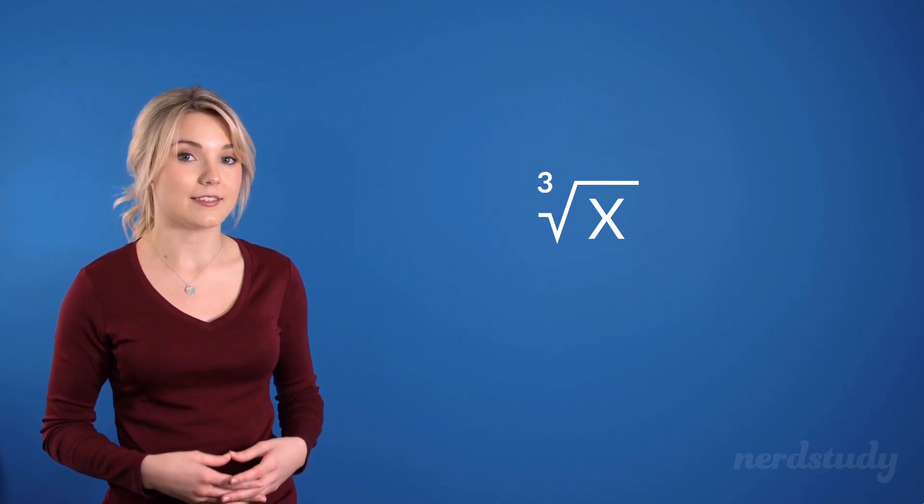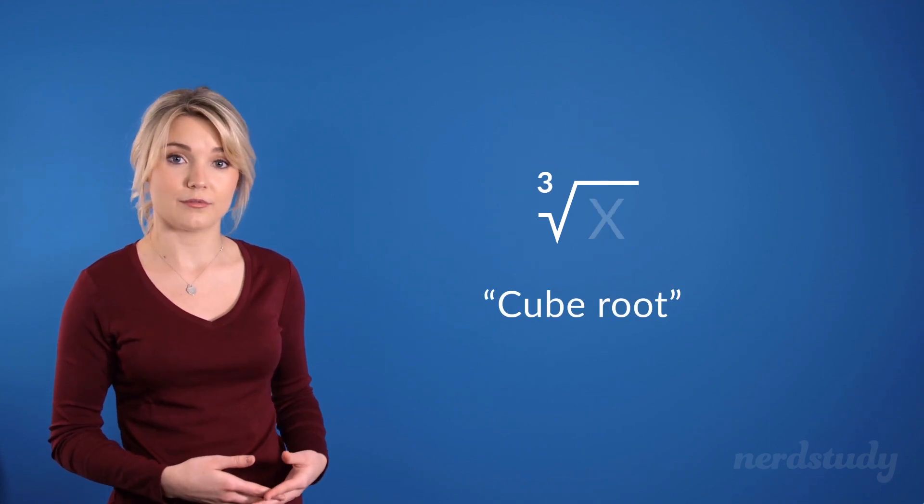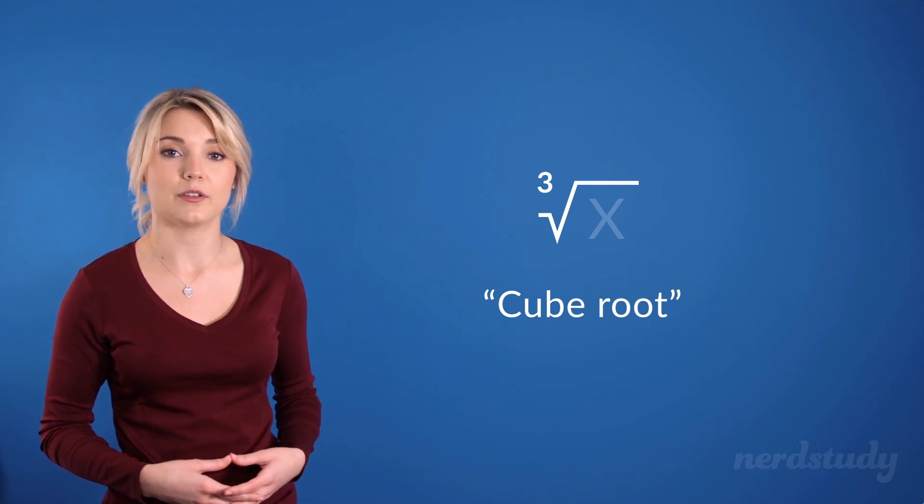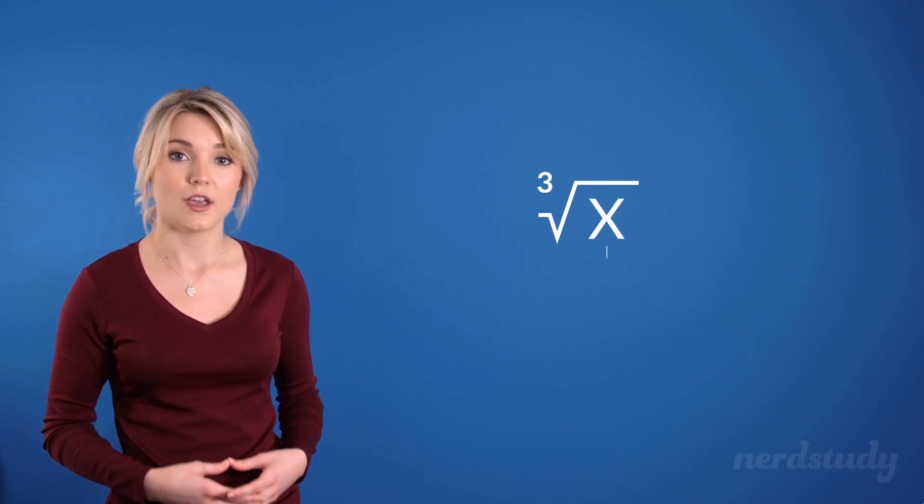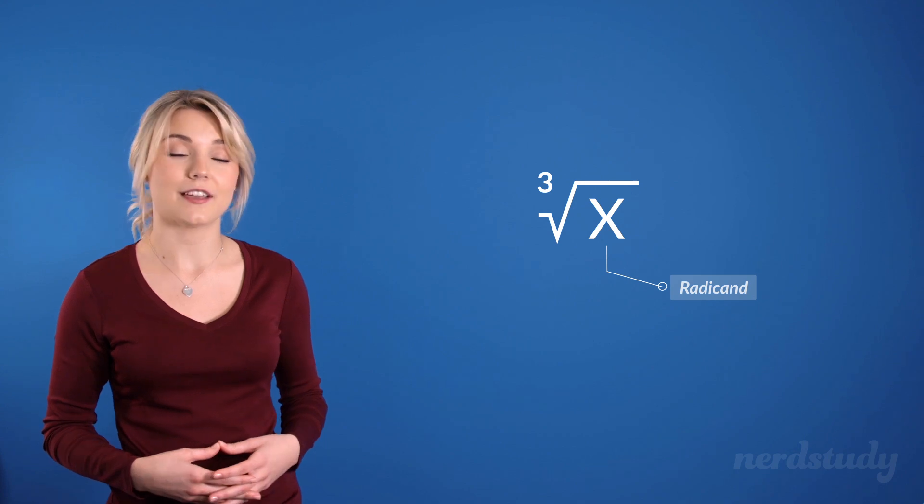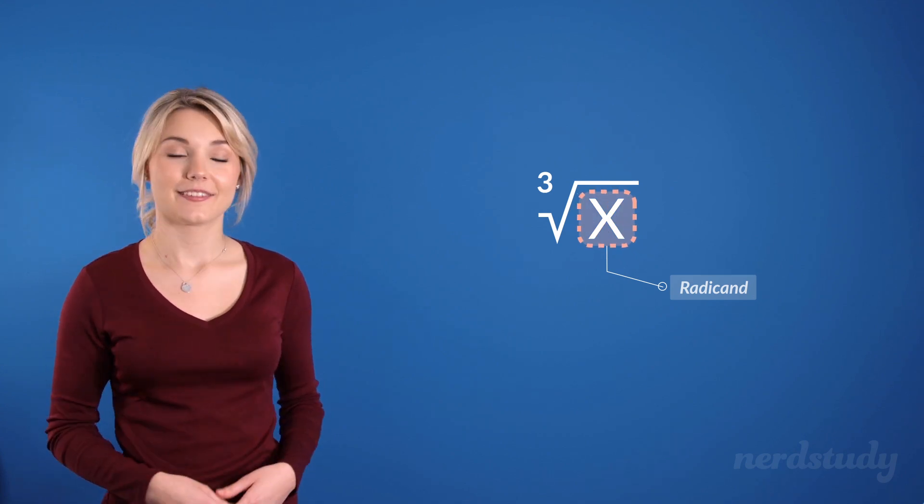So if we had a 3 there instead we'd call it a cube root and we would be looking for a number that multiplies by itself three times to result in the radicand which is everything inside here. Good!